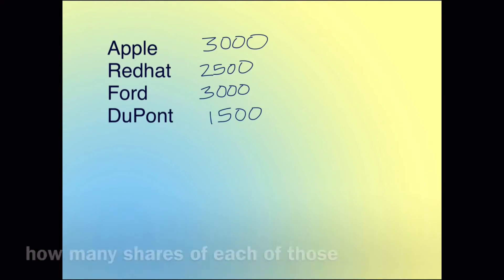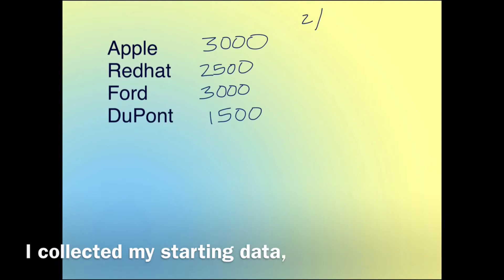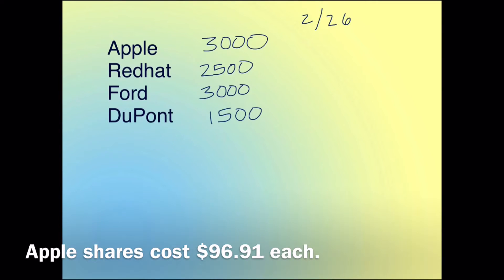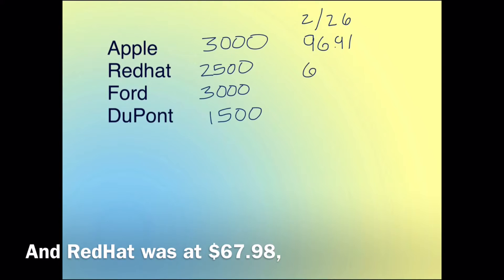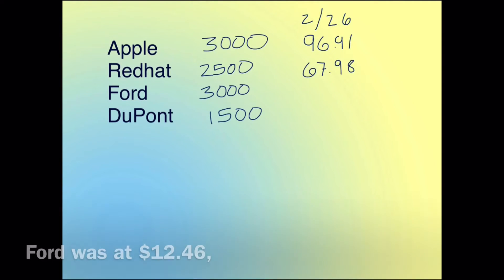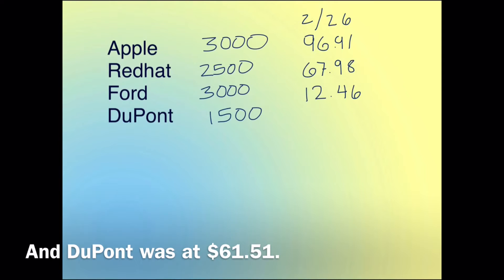Now I need to figure out how many shares of each company I can buy. On 2/26, when I collected my starting data, Apple's shares cost $96.91 each, Red Hat was at $67.98, Ford was at $12.46, and DuPont was at $61.51.